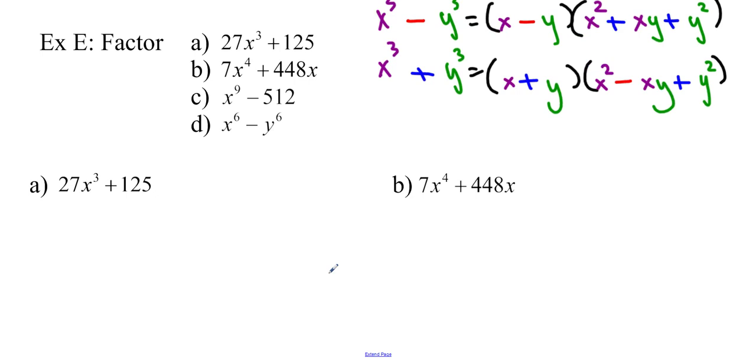So I'm going to start with 27x cubed plus 125. We know that 27x cubed is actually 3x cubed, and 125 is actually 5 cubed. So if you like to write it out, you can do this. If you want to skip it, you can. And we're just going to do this pattern here, x cubed plus y cubed, because this is a plus.